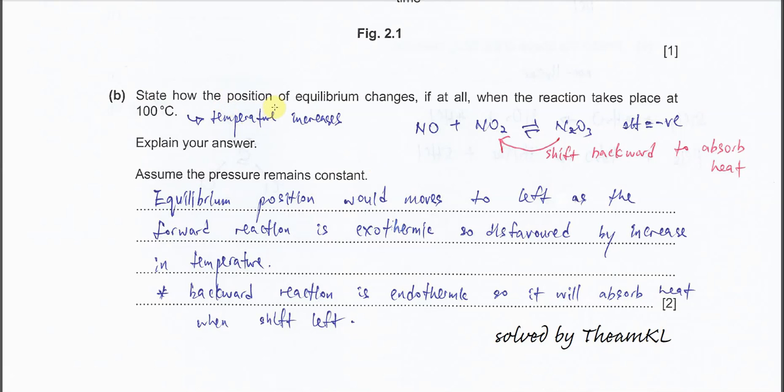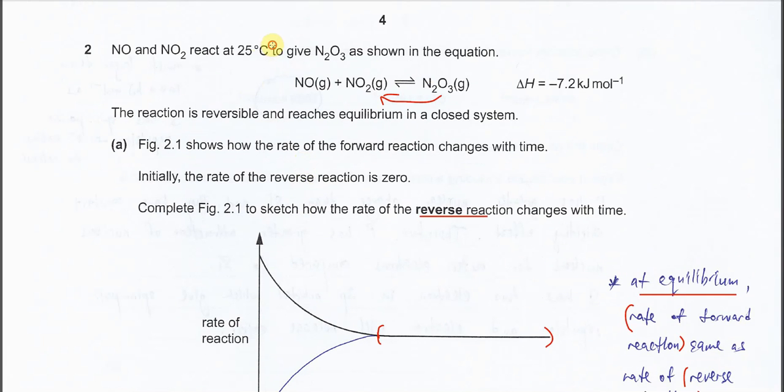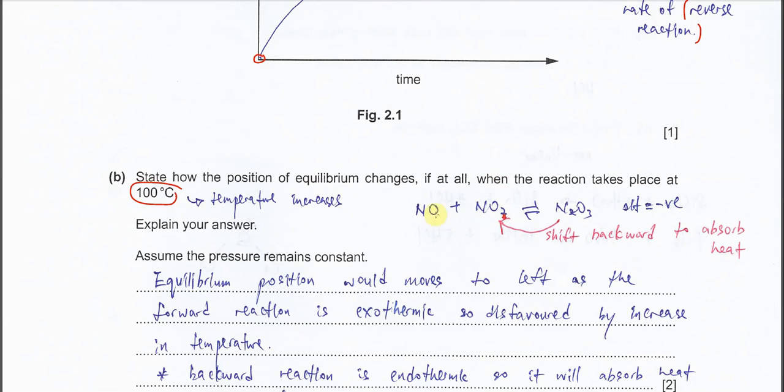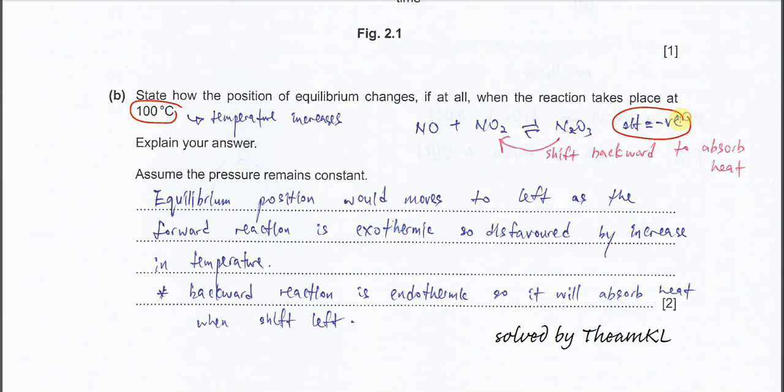Part B. State how the position of equilibrium changes, if at all, when the reaction takes place at 100 degrees C. Initially this reaction happened at 25 degrees C, now the temperature increases from 25 to 100. We know that this reaction is exothermic. The equilibrium will shift backwards, and when it's backwards, it will be endothermic. It will absorb the heat and decrease the temperature. Because the temperature now increased, equilibrium will try to decrease that by shifting the equilibrium to the left-hand side.